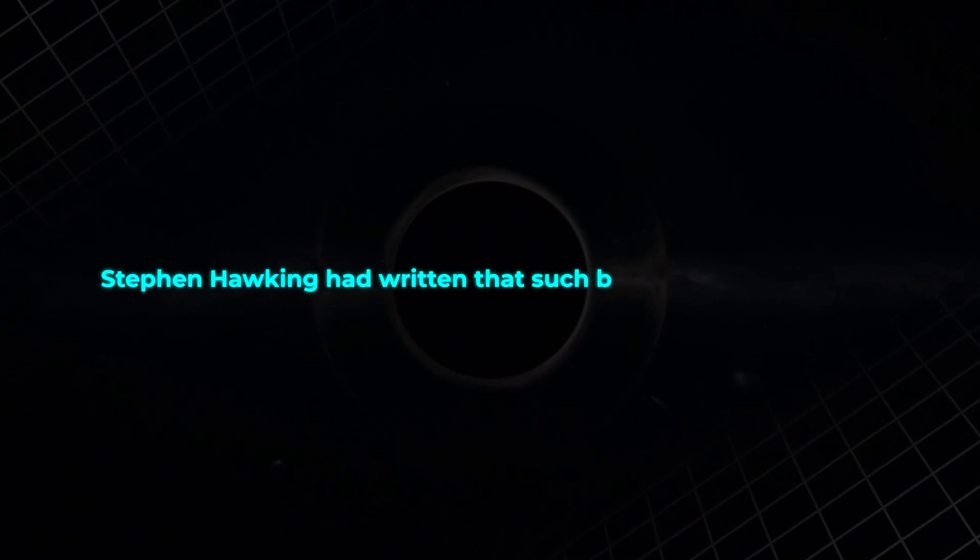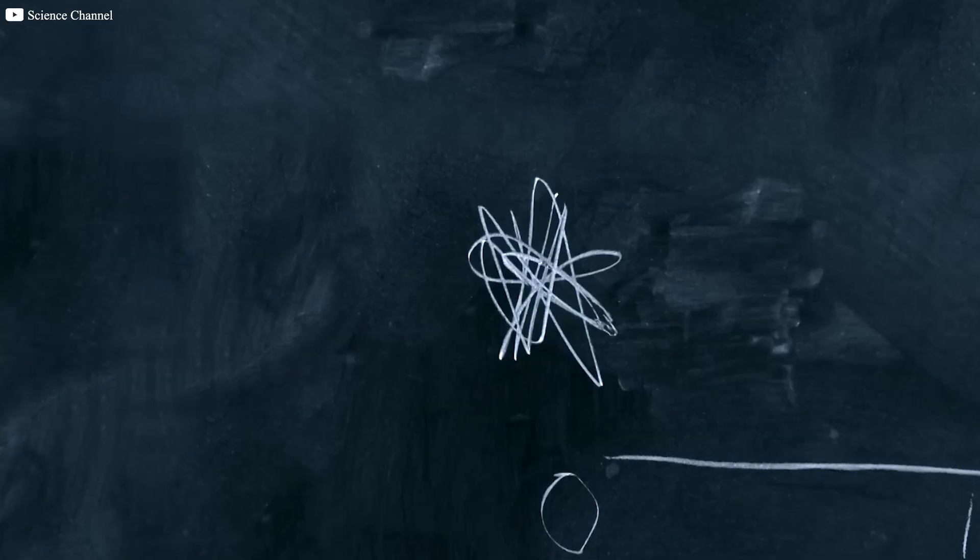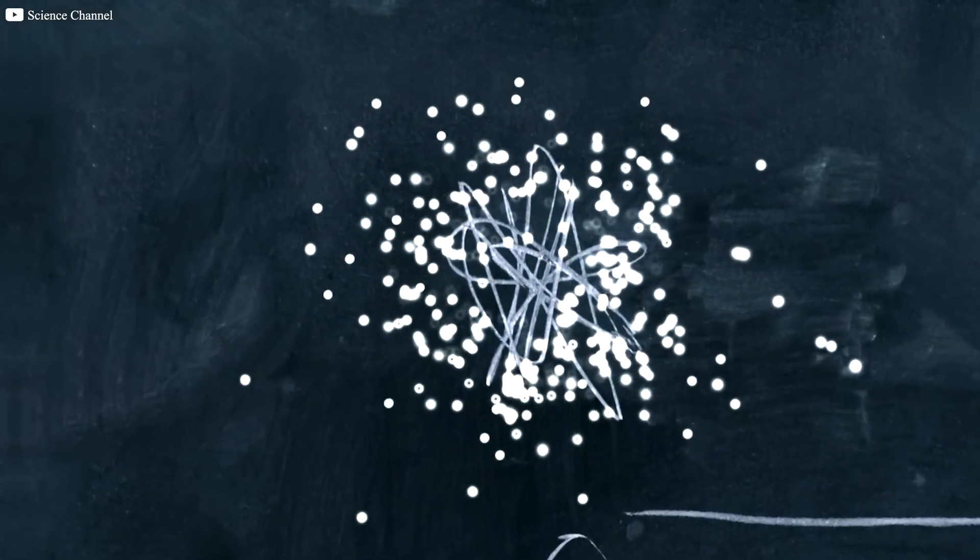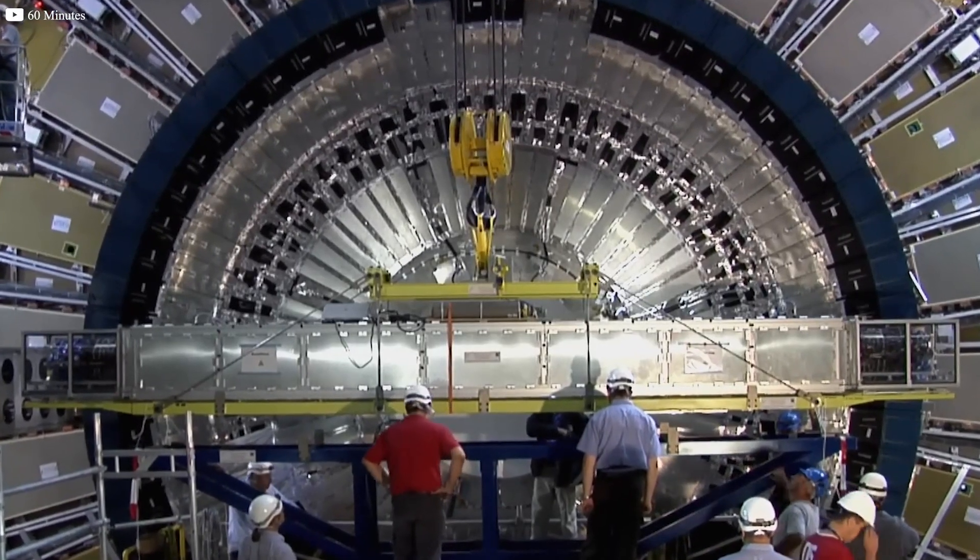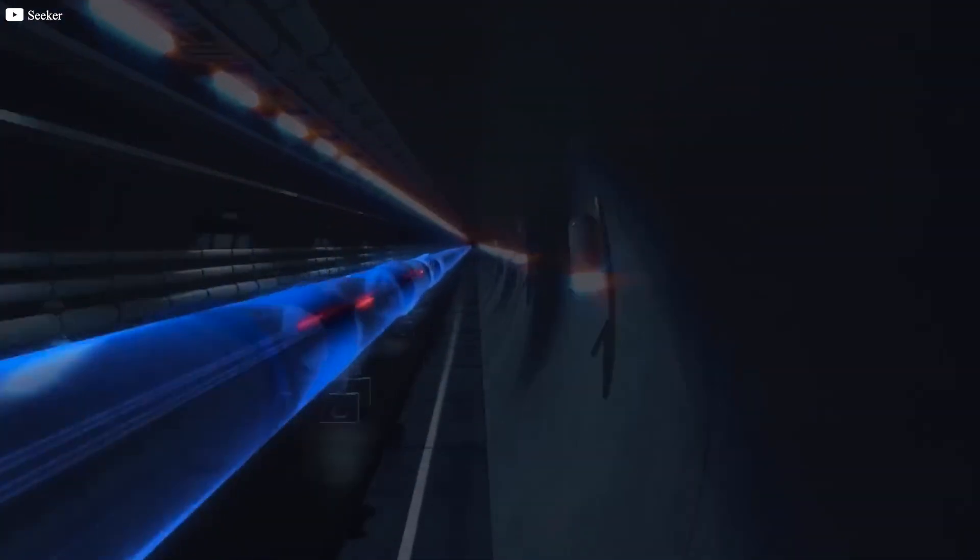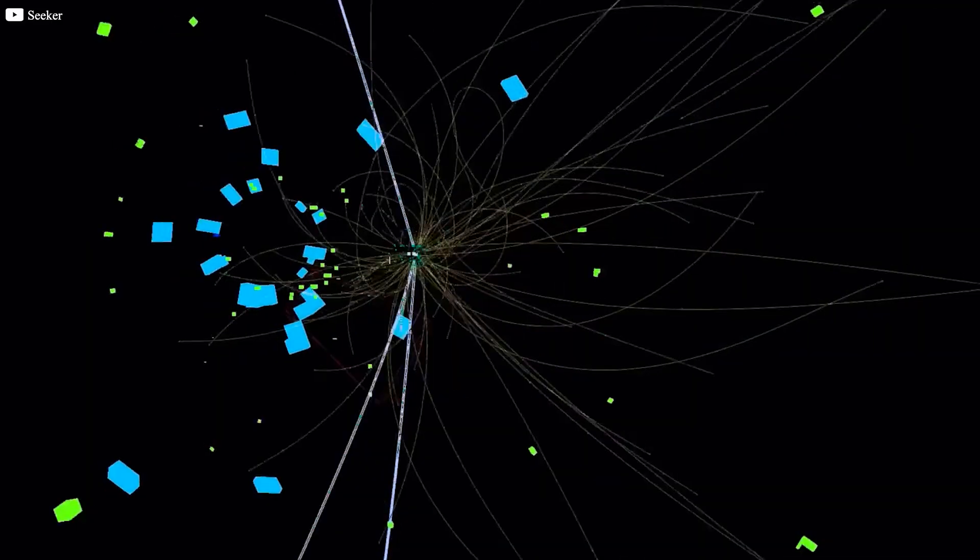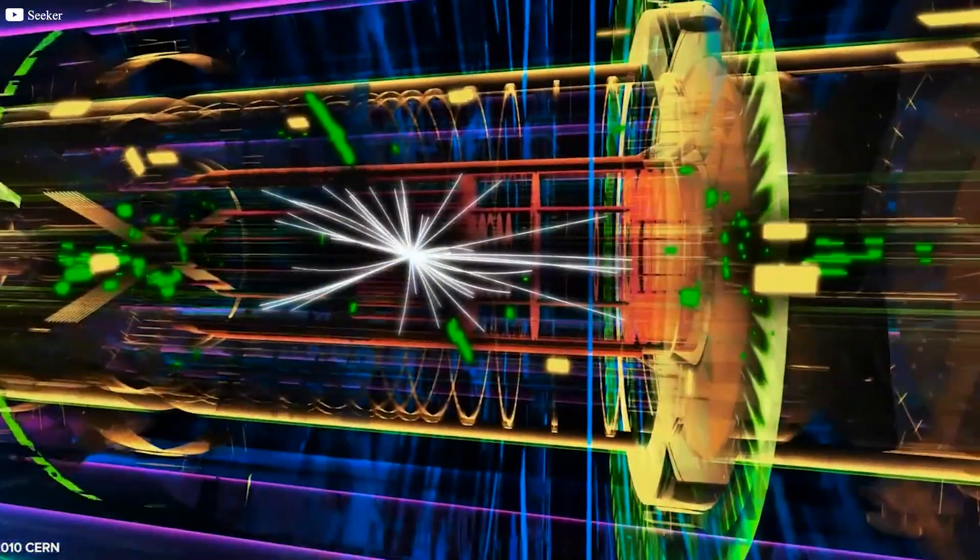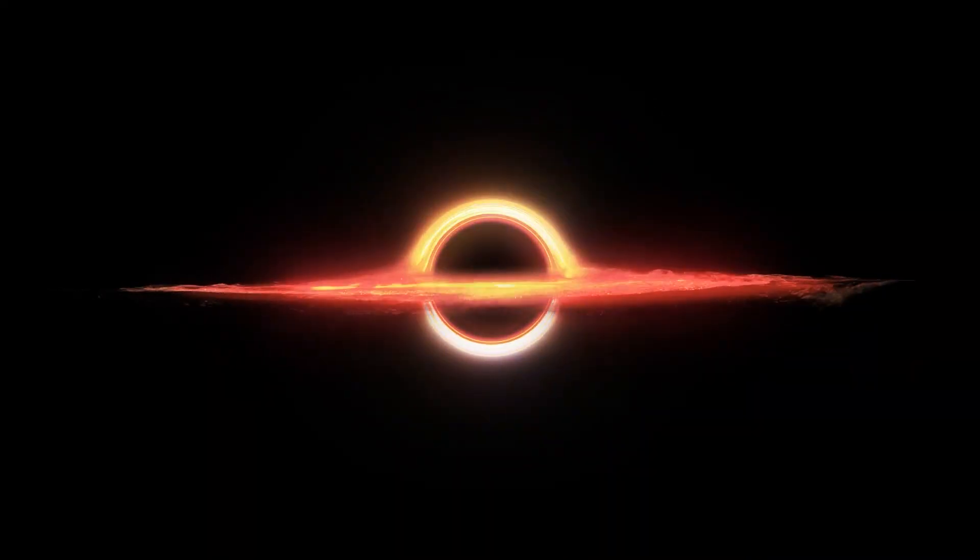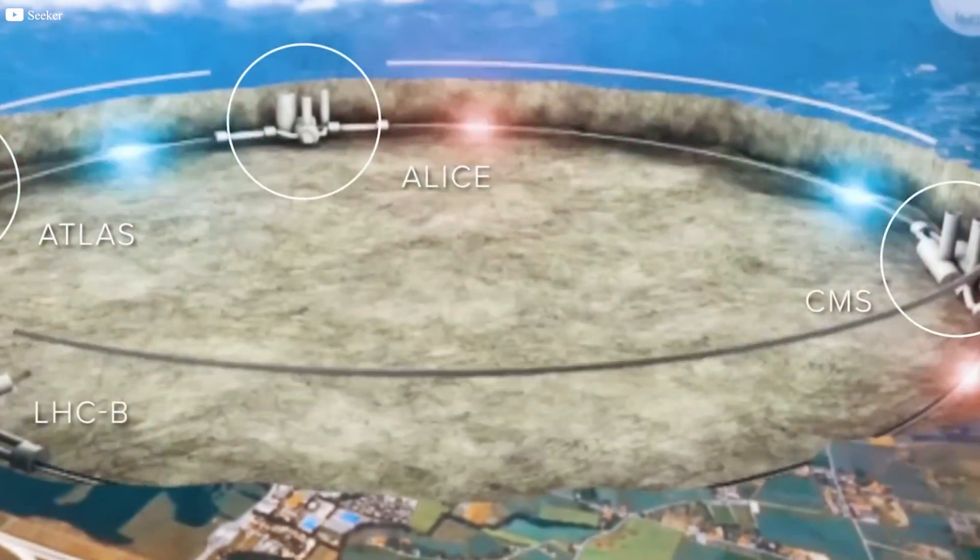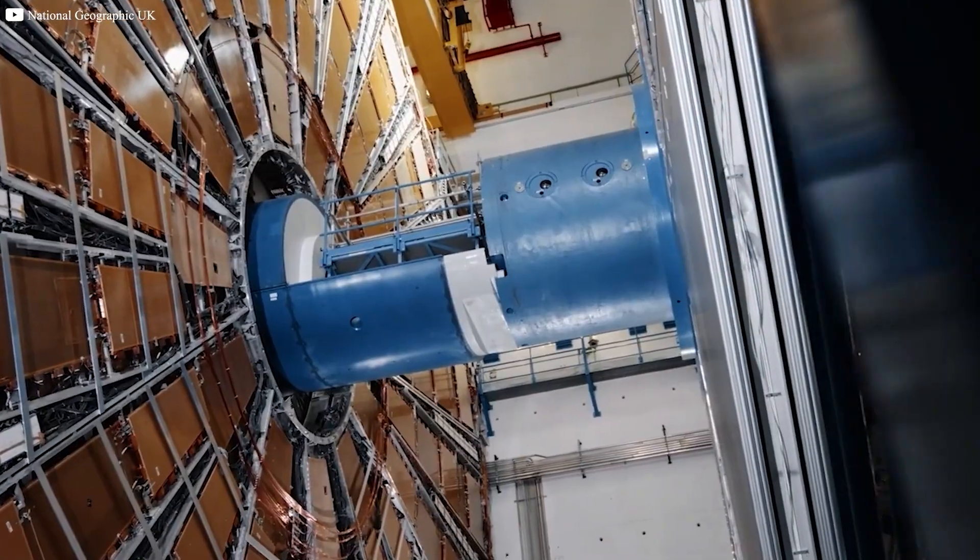Stephen Hawking had written that such black holes might exist. According to his theory, they would vanish almost instantly, releasing radiation as they died. Still, the thought of even one forming on Earth was enough to spark fear. CERN quickly dismissed these concerns, saying the collider's energy was far too low. Yet alternative theories claimed it might only take a few billion electron volts to trigger disaster. Newspapers painted frightening pictures. A black hole appears in Geneva, devouring the city, then swallowing Earth in seconds. It sounded impossible, but the question remained. What if?